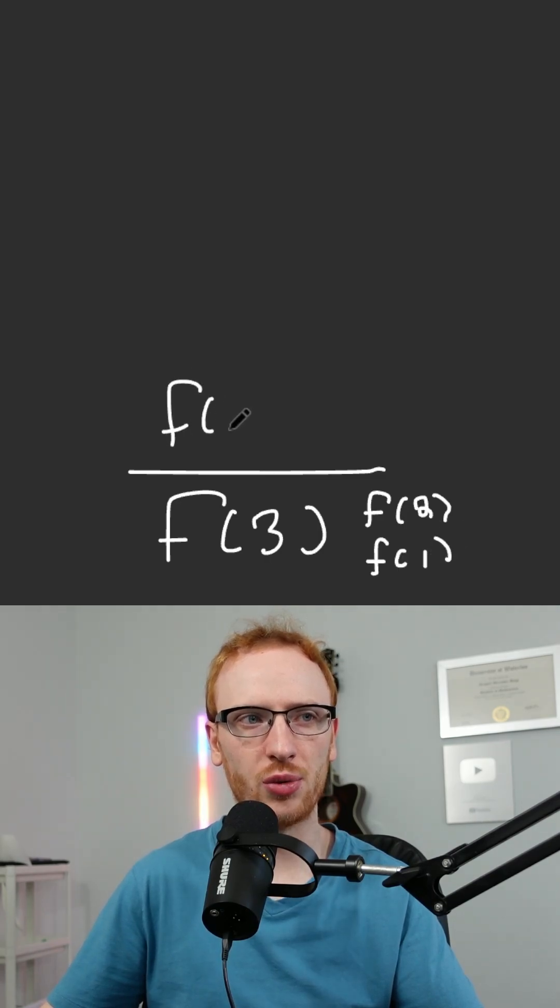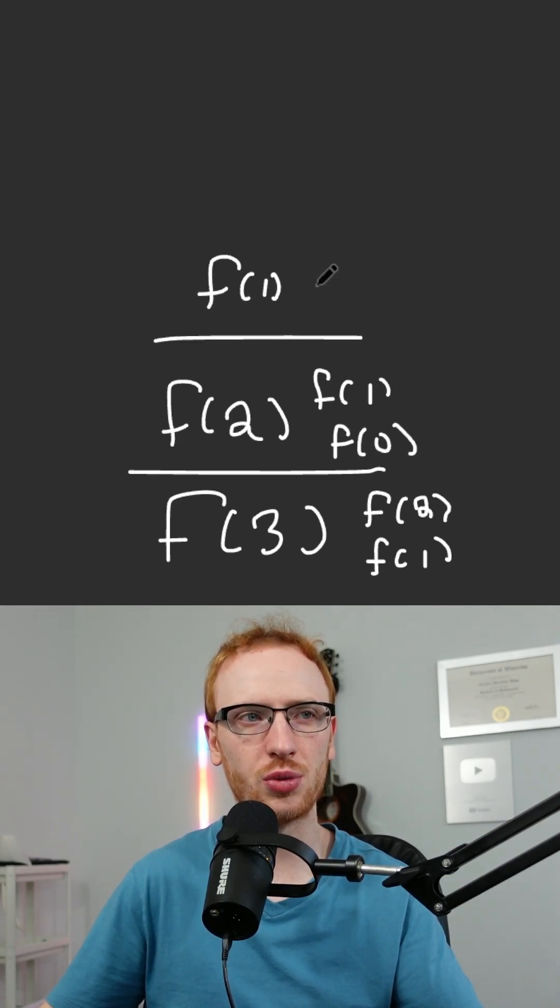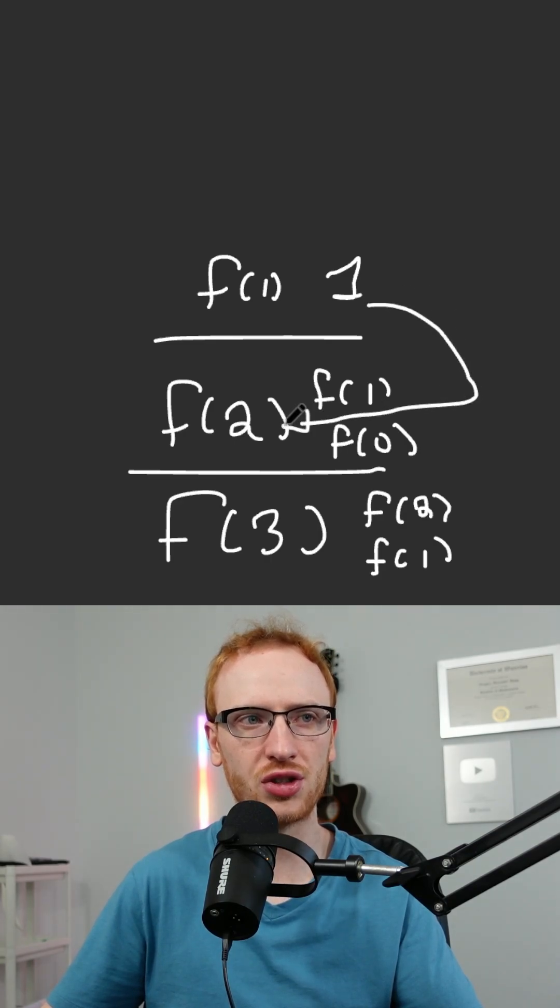So F at 3 needs to figure out what F of 2 is, but F of 2 actually also needs F at 1 and F at 0. We get F at 1, and it's going to return the result of 1 to the return address that's stored in this function call.